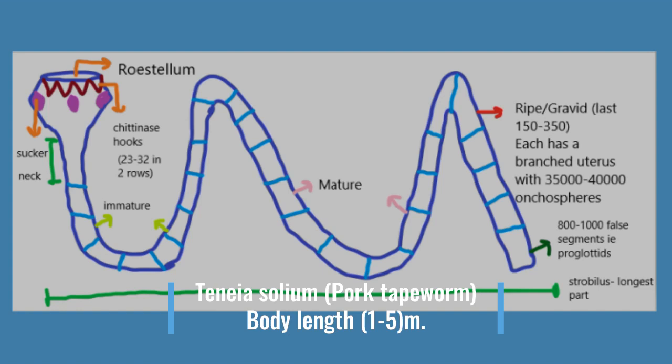Strobila is the longest part. One strobila unit is a proglottid (uterus). The uterus is branched, and one uterus has 35,000 to 40,000 oncospheres, and inside those oncospheres are hexacanth. The strobila proglottids develop in stages: the next part is called immature, meaning the uterus is not well developed; then mature, where it is well developed; and the last part is called ripe or gravid.